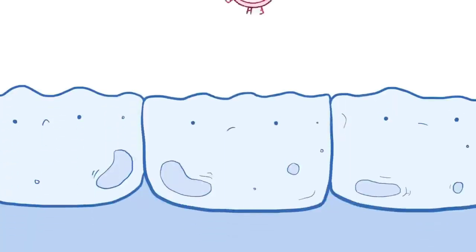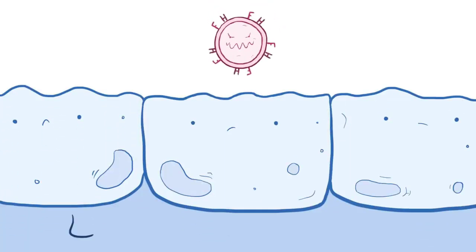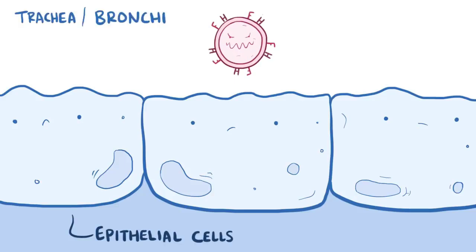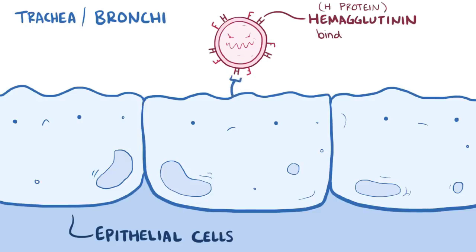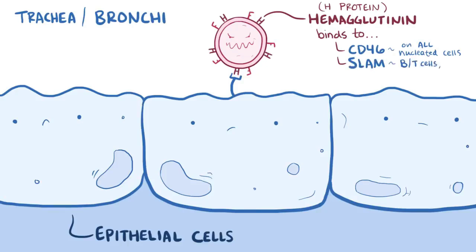Once the measles virus gets onto the mucosa of an unsuspecting person, it quickly starts to infect the epithelial cells in the trachea or bronchi. The measles virus uses a protein on its surface called hemagglutinin, or H-protein, to bind to a target receptor in the host cell, which could be CD46 — expressed on all nucleated human cells — CD150, also known as signaling lymphocyte activation molecule or SLAM, found on immune cells like B and T cells and antigen-presenting cells, or Nectin-4, a cellular adhesion molecule.